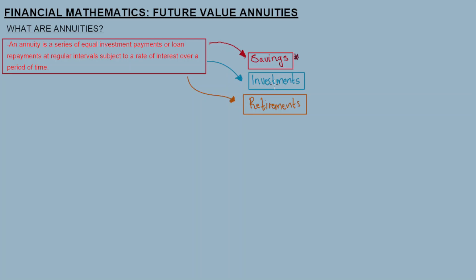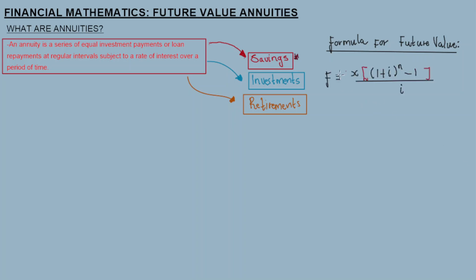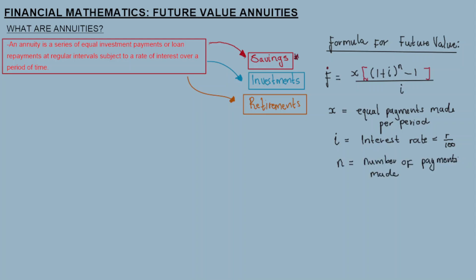So that's all about annuities. Now let's look at how to calculate using the future value annuities formula. In the formula: F stands for future value, x stands for equal payments made per period, i is the interest rate which equals the rate given divided by 100, and n is the number of payments made.